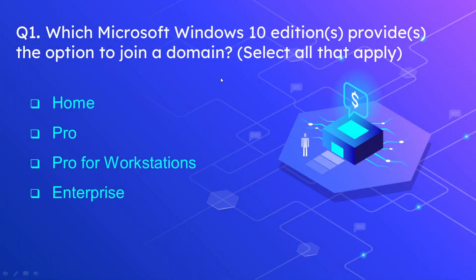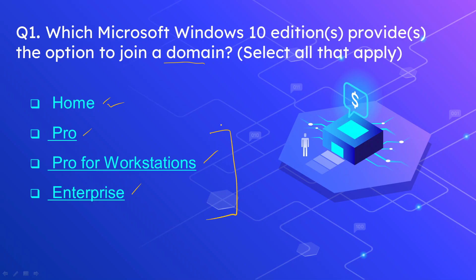The first question is: which Microsoft Windows 10 editions provide the option to join a domain? Select all correct answers. The options are Home Edition, Pro Edition, Pro for Workstations Edition, or Enterprise Edition. The correct answers are, besides Home, all three — Pro, Pro for Workstations, and Enterprise — they support domain joining. With the Home Edition, you cannot join a domain.